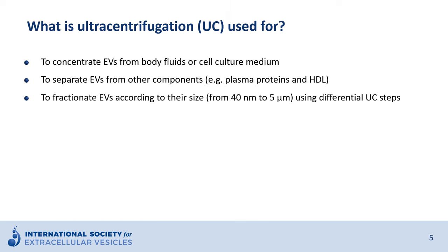So what is ultracentrifugation used for? First, it is used to concentrate EVs from body fluids or cell culture medium. It is also used to separate EVs from other compartments such as the earlier mentioned lipoproteins and freely soluble proteins. Ultracentrifugation is also used to fractionate EVs according to their size, which is done using differential ultracentrifugation steps.